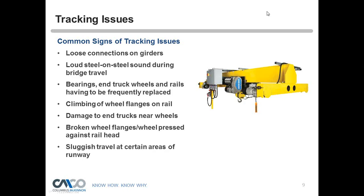Signs of tracking issues — how do you know you have a tracking problem with your crane? You're seeing loose connections on girders, loud steel-on-steel sound during bridge travel, bearings and end truck wheels and rails being frequently replaced. You may also see climbing wheel flanges on the rail, damage to end trucks, broken wheel flanges, wheels pressing against the rail head, and sluggish travel at certain areas of the runway. You may mistakenly think you have an electrical issue when it's actually a tracking problem.